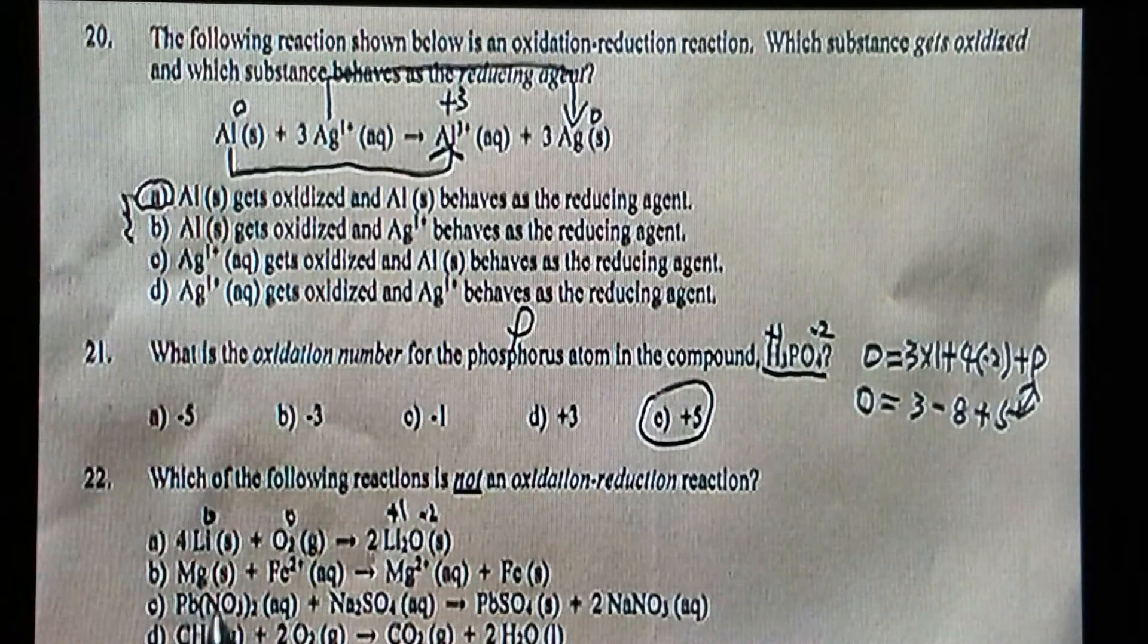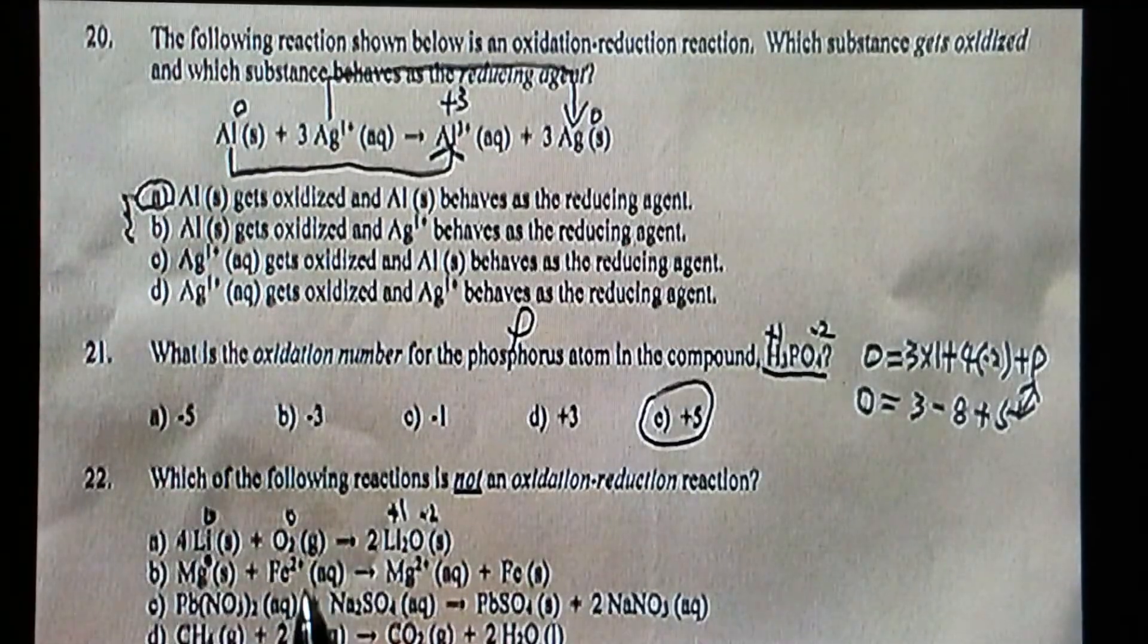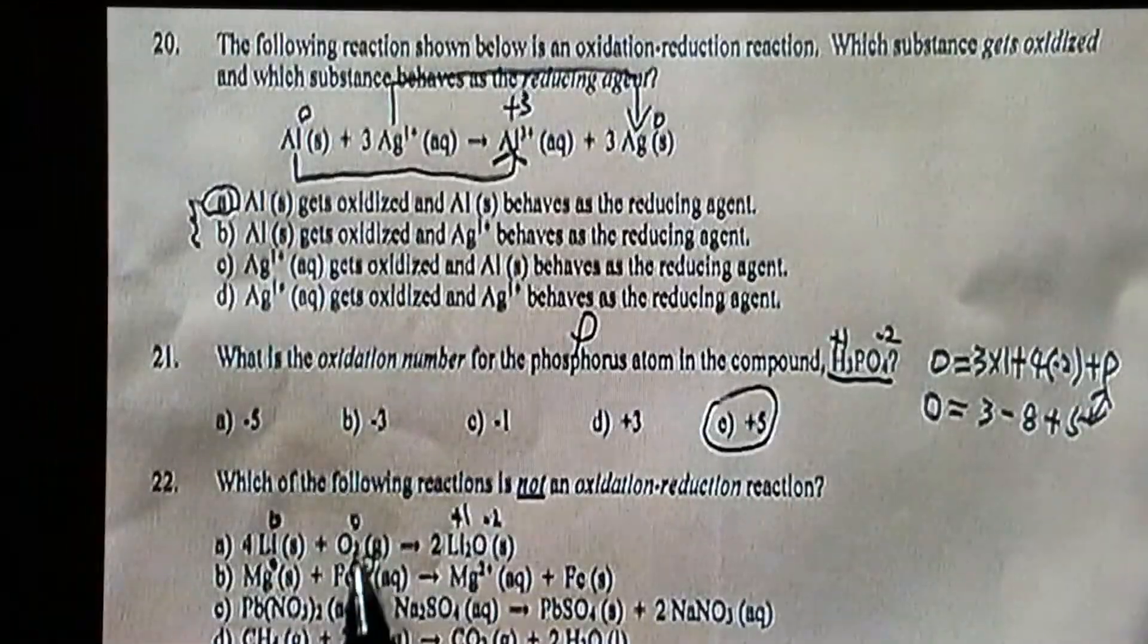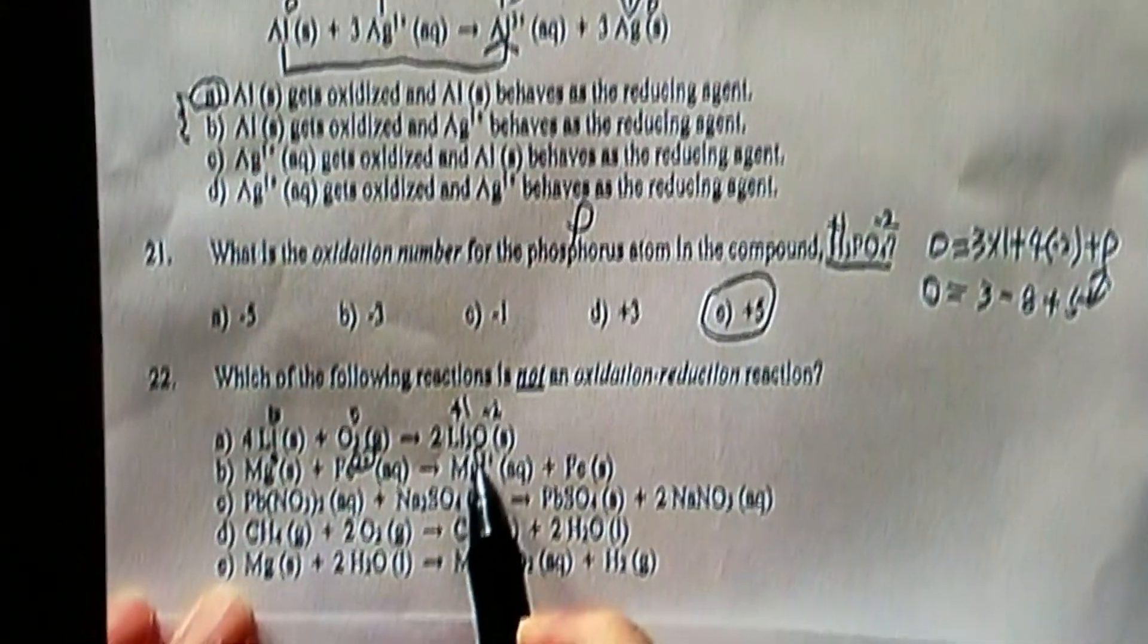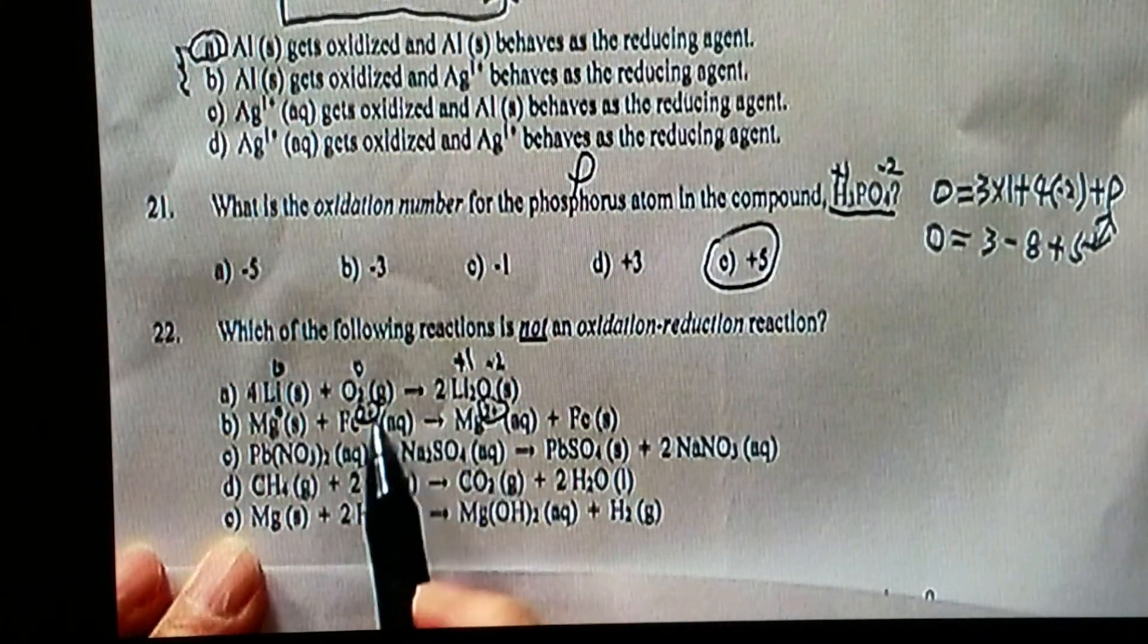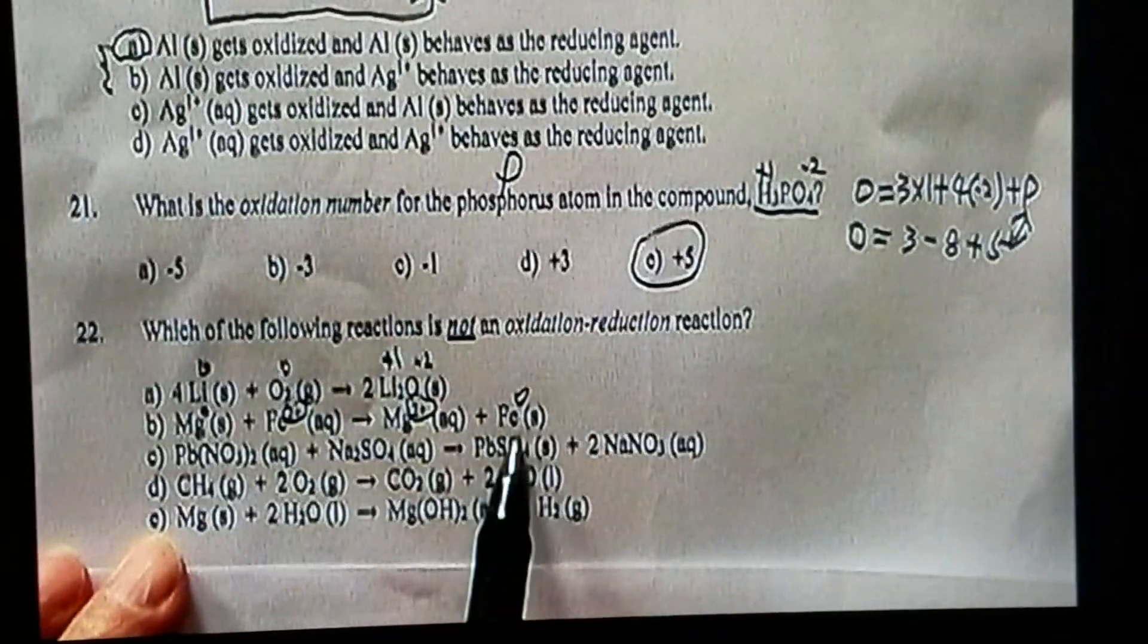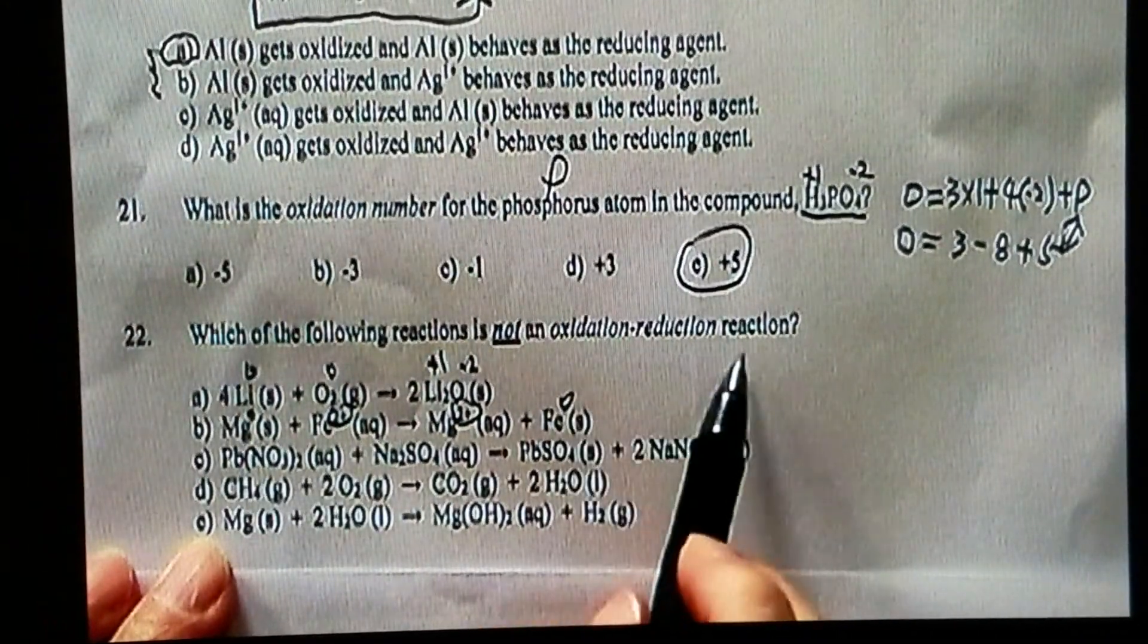And now let's take a look at the second one. Magnesium, that's zero, Fe, that's two plus, the magnesium two plus now, it gets oxidized magnesium. And iron two plus becomes iron zero, that is reduced, that's also a redox reaction.